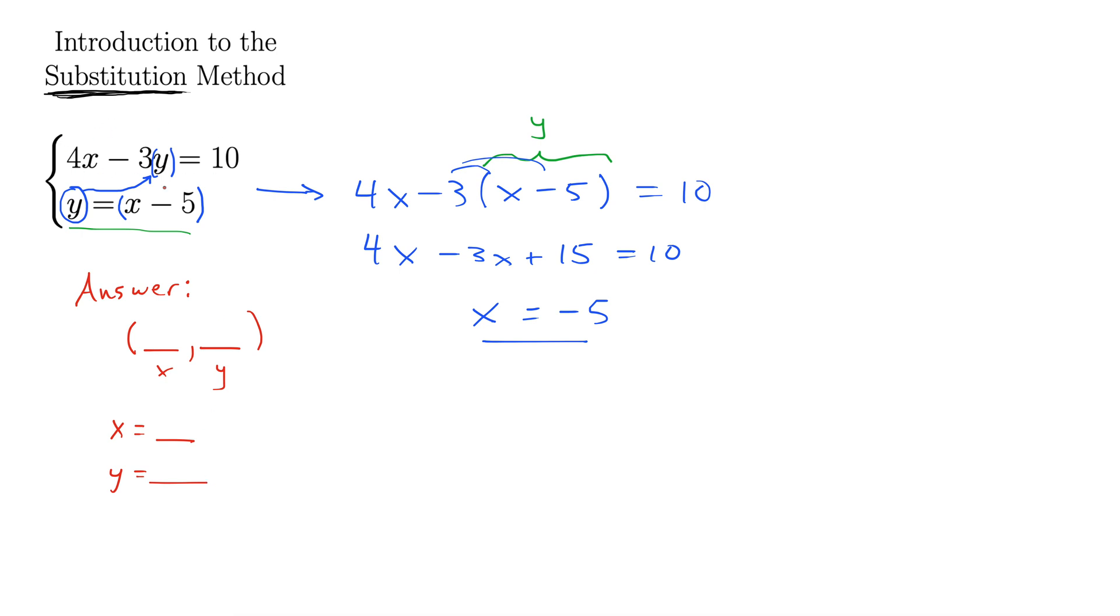Because the answer, the solution to this system of equations, is where these two lines cross. These are both going to be lines, and where two lines cross is an ordered pair, also known as a point.